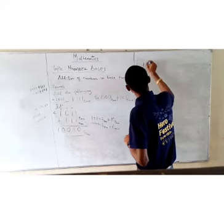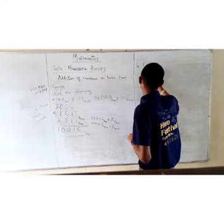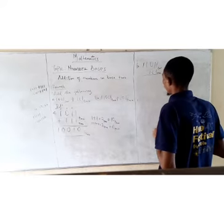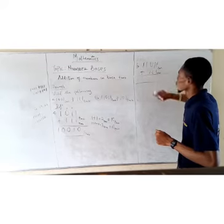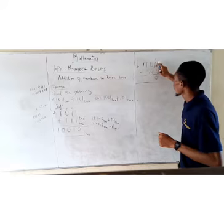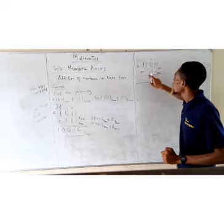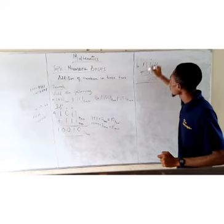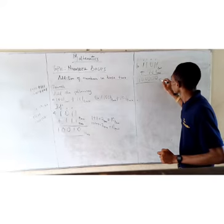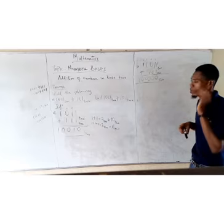Now let's do the second one. We have 11011₂ plus 101₂. Working through the addition, 11011 plus 101 in base 2 gives us 100000 in base 2.